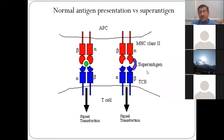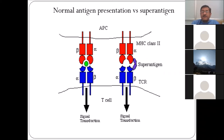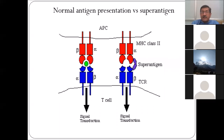Super antigens are responsible for massive release of cytokines, which can cause sometimes fatal disease. One such disease is staphylococcal toxic shock syndrome. The toxin TSST-1, produced by Staphylococcus aureus, non-specifically stimulates multiple different clones of T cells, and all these activated T cells release large amounts of cytokines that bring about harmful effects in the person.